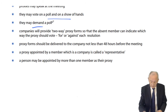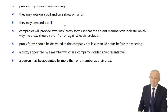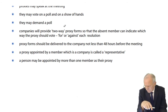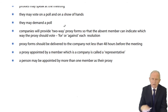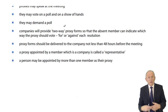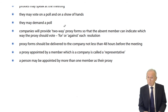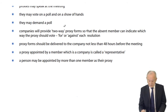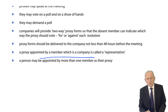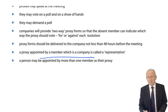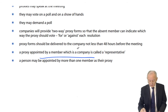Proxy forms should be delivered to the company no later than 48 hours before the meeting. If the articles require more — for example, 72 hours — that is an invalid requirement. Therefore a proxy may validly exercise their rights simply by turning up at the meeting, because any requirement beyond 48 hours is not valid. A proxy appointed by a member which is a company is called a representative, not a proxy — previously representatives could speak at meetings where proxy persons could not, though it's a fine point unlikely to be examined.